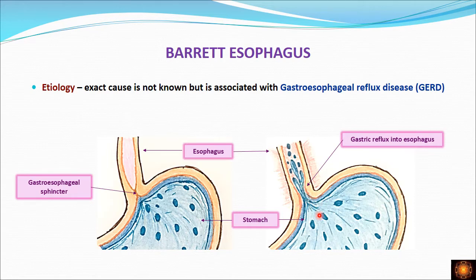In this condition, where there is loosening of the lower esophageal sphincter which cannot be tightly closed, the gastric contents reflux back into the esophagus. The acid content present in these gastric contents causes damage to the esophageal mucosa, and we have that metaplastic change.